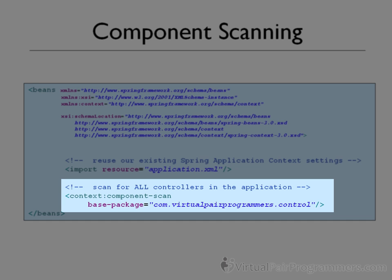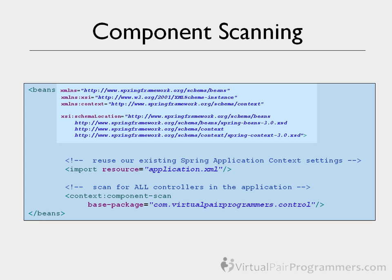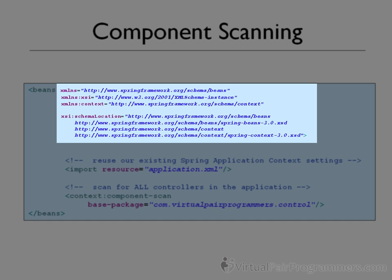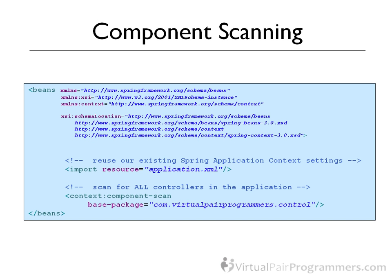It doesn't check all of our classes — we give it a base package to start from. In our case, we just want it to look inside the com.virtualpairprogrammers.control package. To make this work, you will need the full schema description that you can see here. It's absolutely horrible — don't ever try to type that yourself. I've simply copied it from the Spring reference manual, and it's also part of the file I supplied to you.